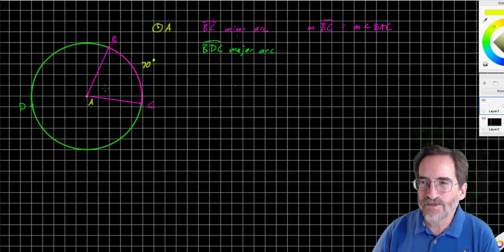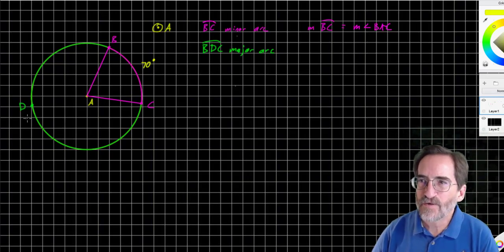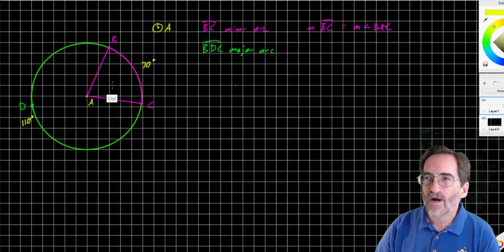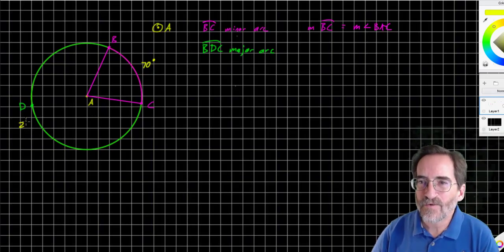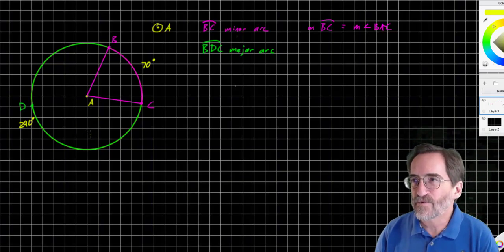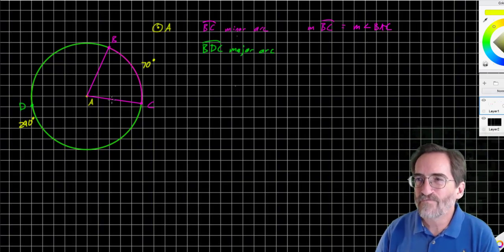Let's say that angle BAC looks like about 70 degrees. We would say the measure of arc BC is 70 degrees. If this is 70 degrees, a full circle is 360, so the measure of arc BDC is 290 degrees, so that together they make 360 degrees for a full circle. That's how we measure an arc.